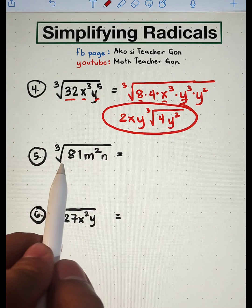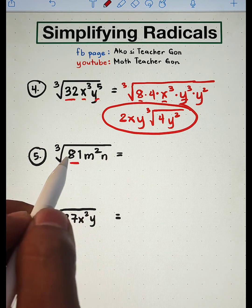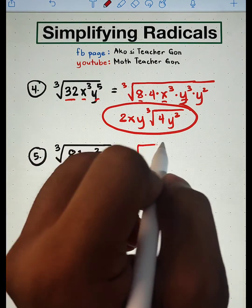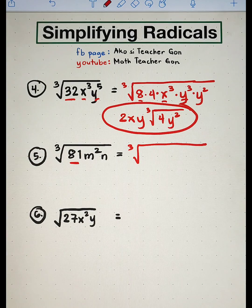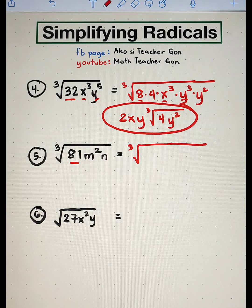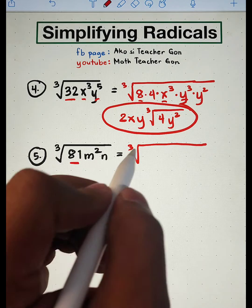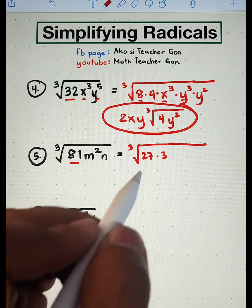Last, we have the cube root of 81 m squared n. It's good here because you need to memorize the perfect cubes and the perfect squares. That's one of the basics of simplifying radicals. We can factor out 81 as 27 times 3, because 27 is a perfect cube. While m squared and n don't have a factor.